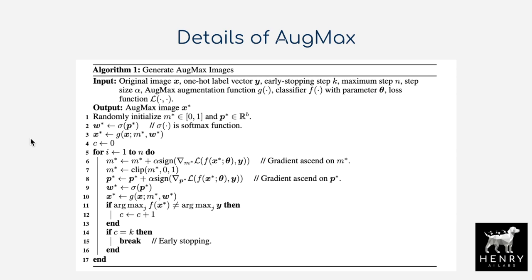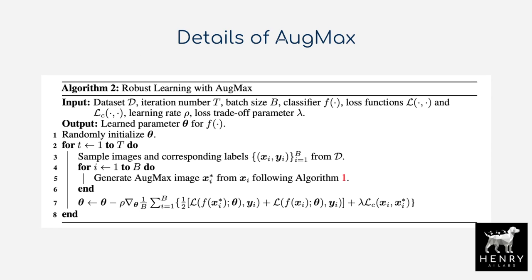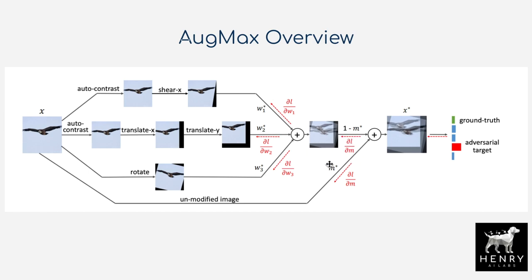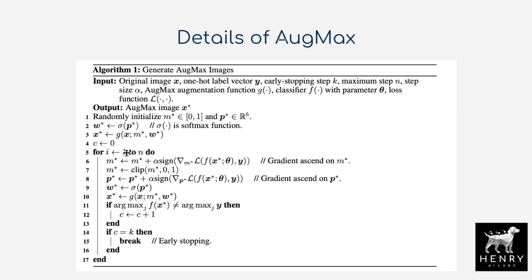The Augmax algorithm alternates between gradient descent on the classifier F and gradient ascent on the augmentation weighting — going all the way to the input similar to feature visualization algorithms. No separate parameter storage is needed for the adversarial component; it uses projected gradient ascent with early stopping to form the hard augmented examples for training.